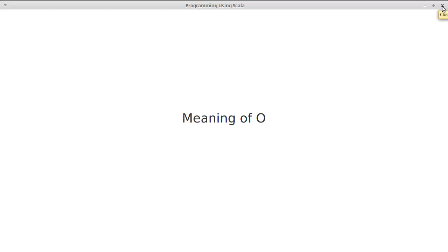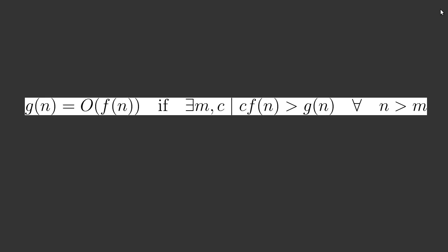The first thing that we'll look at is the formal mathematical definition. So g of n here is where you've actually gone and measured the amount of work that a program or part of a program does for an input size n. When we talk about measuring the amount of work, we generally don't talk about time because in some ways time is too poorly defined.